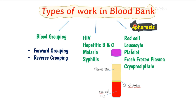The types of work in a blood bank: first and most importantly, blood grouping — we check the blood group such as A, B, or others by forward grouping or reverse grouping. We also check for infectious diseases that can be transmitted through transfusion, such as HIV, hepatitis B and C, malaria, syphilis, etc.